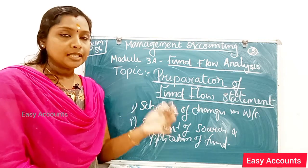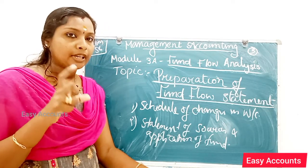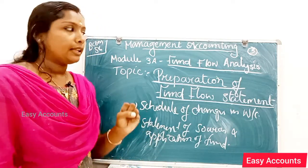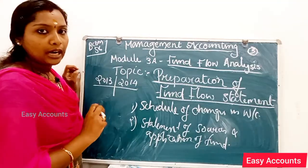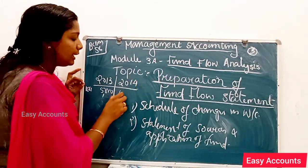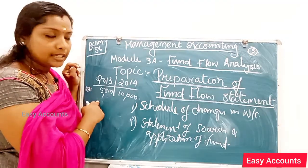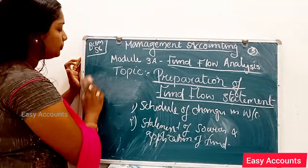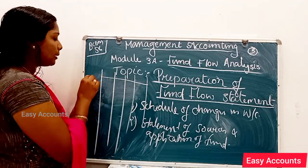While preparing the schedule of changes in working capital, we compare figures over two years — showing increases and decreases. We call the first item debtors. We have a 2-year schedule, for example, 2013 and 2014, and then we identify the increase and decrease for each item.